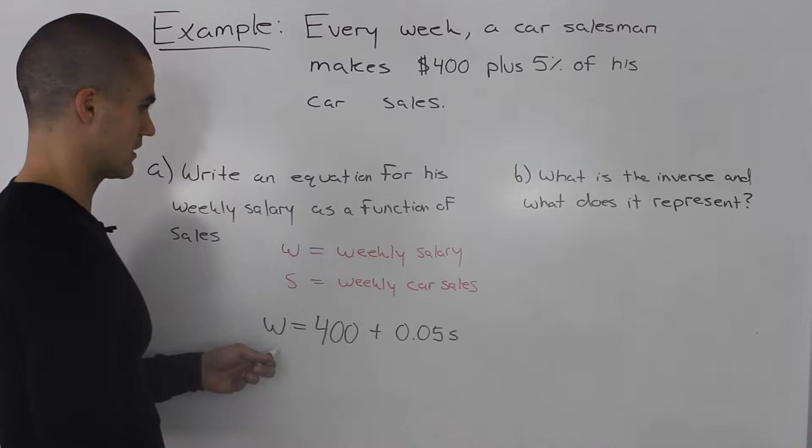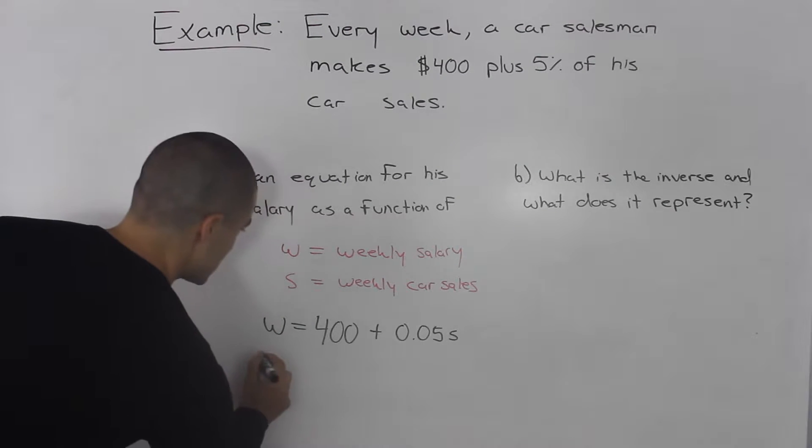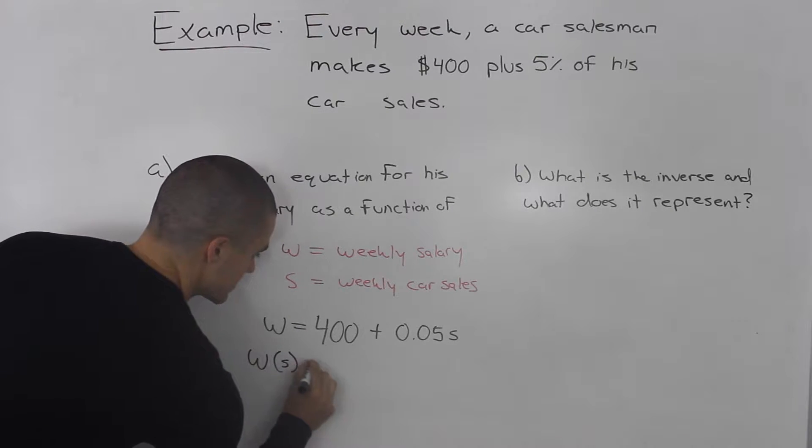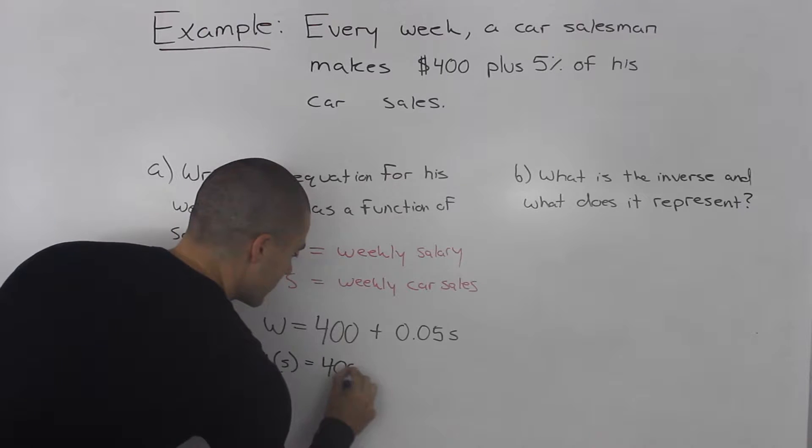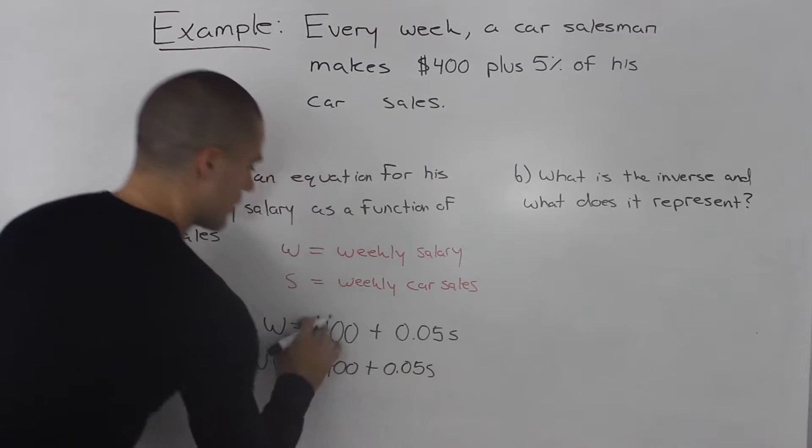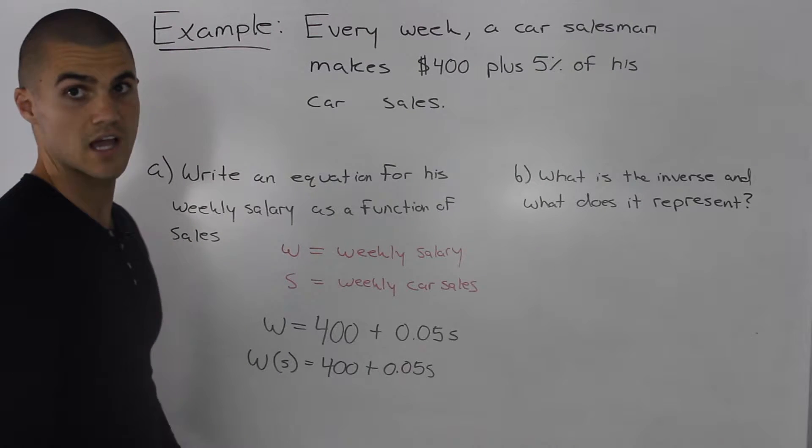That is the answer to part A. We can also rewrite this W instead as W as a function of S to make it even more proper. But at the end of the day, they're both the same thing. $400 plus 0.05 times S.